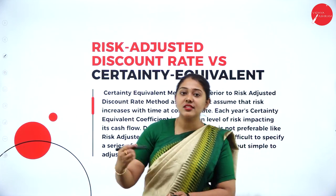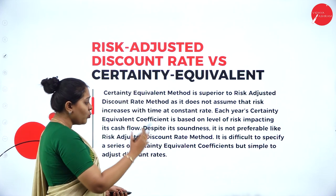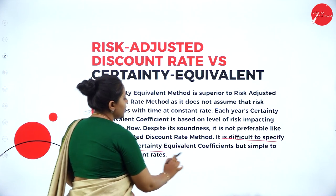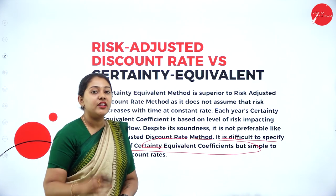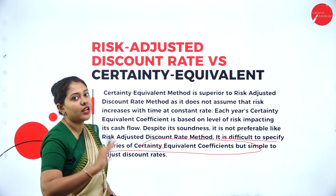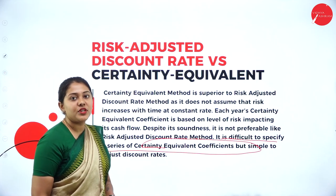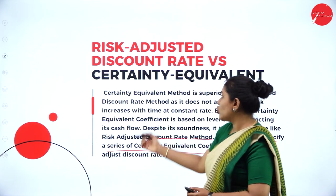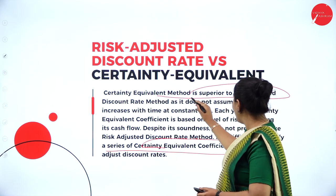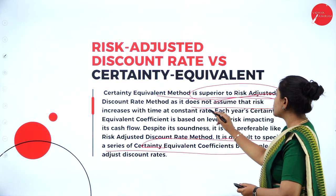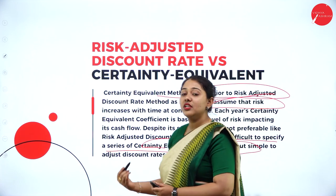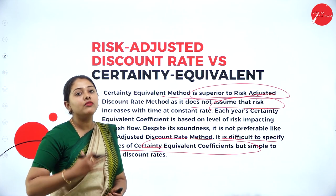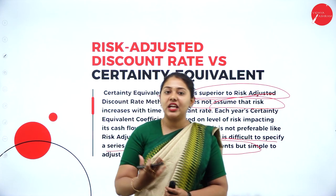Risk adjusted discount rate versus certainty equivalent approach — which is easier? Some think risk adjusted discount rate is easier. This is more difficult because certainty equivalent coefficients are harder to determine than simply adjusting the discount rate. This perception depends on the management. Certainty equivalent method is considered superior to the risk adjusted discount rate method because it does not assume that risk increases with time at a constant rate. However, it depends on the company taking up the project.